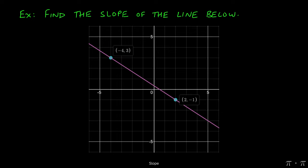Let's say we're asked to find the slope of the line given below. We can observe that the line passes through negative 4 comma 3, which is this point over here, and 2 comma negative 1.